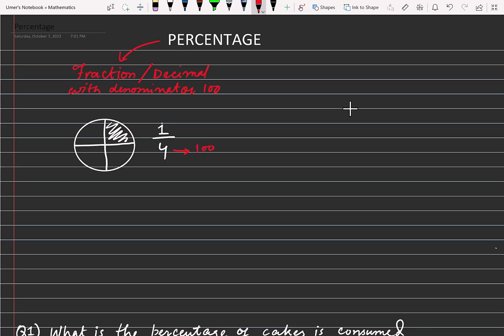Now you tell me, to change 4 into hundred, what should I multiply with? I will multiply with 25. So basically this is the logic - we create an equivalent fraction whose denominator is hundred.